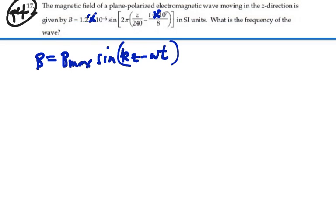So by identification, our angular frequency is going to equal 2π times 10 to the 7 over 8. We know that angular frequency should equal 2π times the frequency.